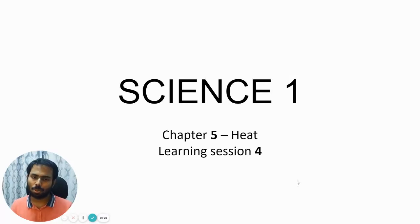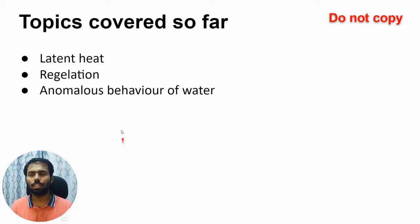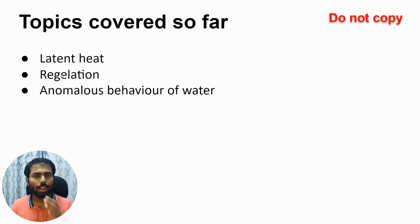Hello and welcome to the fourth learning session of Chapter 5 of Science 1, which is Heat. So far in this chapter we have covered: first, latent heat — the amount of heat absorbed or released by an object when it changes its state. Then we looked at regelation — when you put pressure on ice it converts into liquid, and when that pressure is removed, the liquid converts back into ice.